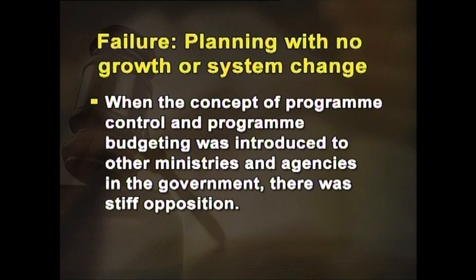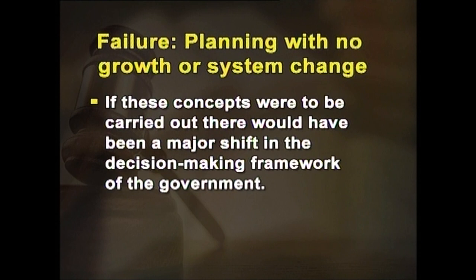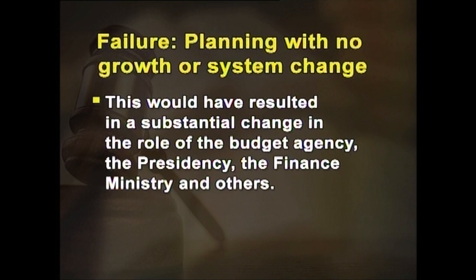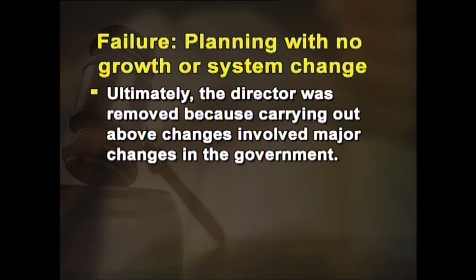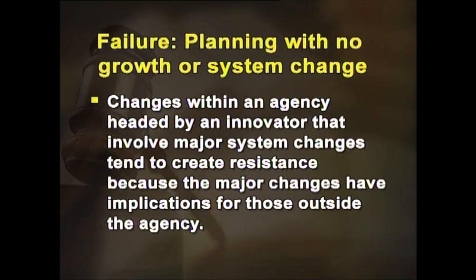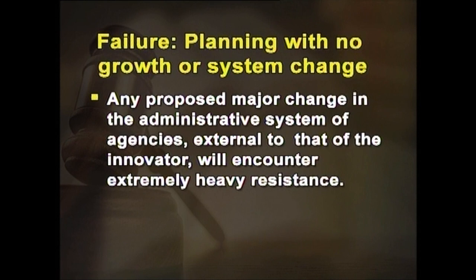When the concept of program control and program budgeting was introduced to other ministries and agencies, there was stiff opposition, as it would have caused a major shift in the decision-making framework of the government. Ultimately, the director was removed because the changes involved major alterations in the government. Wiedner brought to the fore that changes within an agency headed by an innovator involving major system changes create resistance; any proposed major change to systems of external agencies encounters extremely heavy resistance; and innovation short of government-wide change is inhibited where central controls are present.